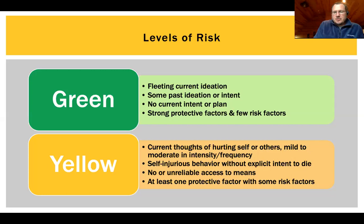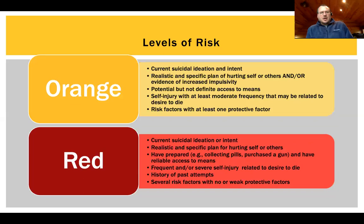Yellow: there are current thoughts of hurting self or others deemed to be mild to moderate in terms of intensity and frequency. There may be some self-injurious behavior, but it is without explicit intent. The prototype includes acknowledged no intent, no or unreliable access to lethal means, and at least one protective factor.